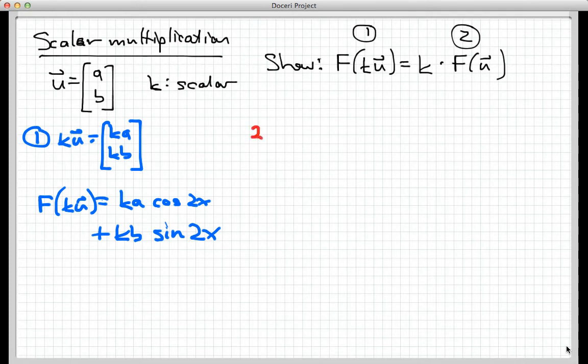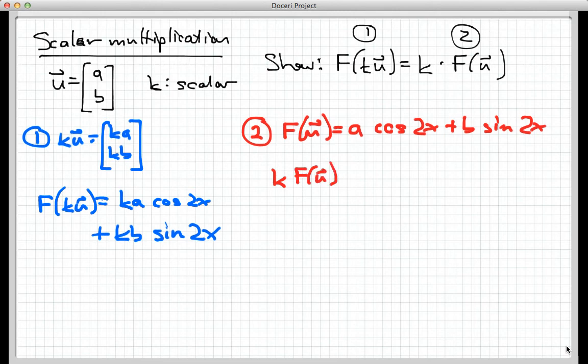Let's do part two, which is k·F(U). I need to do F(U) first, and as we know, that's going to be a·cos(2x) + b·sin(2x). If I now calculate k times that, I think you can see what I'm going to have. I'm going to have k times all this stuff, and distributing the k through gives me ka·cos(2x) + kb·sin(2x). As you can plainly see, these two are equal. So not only does F preserve vector addition, it also preserves scalar multiplication. That makes F a linear transformation.